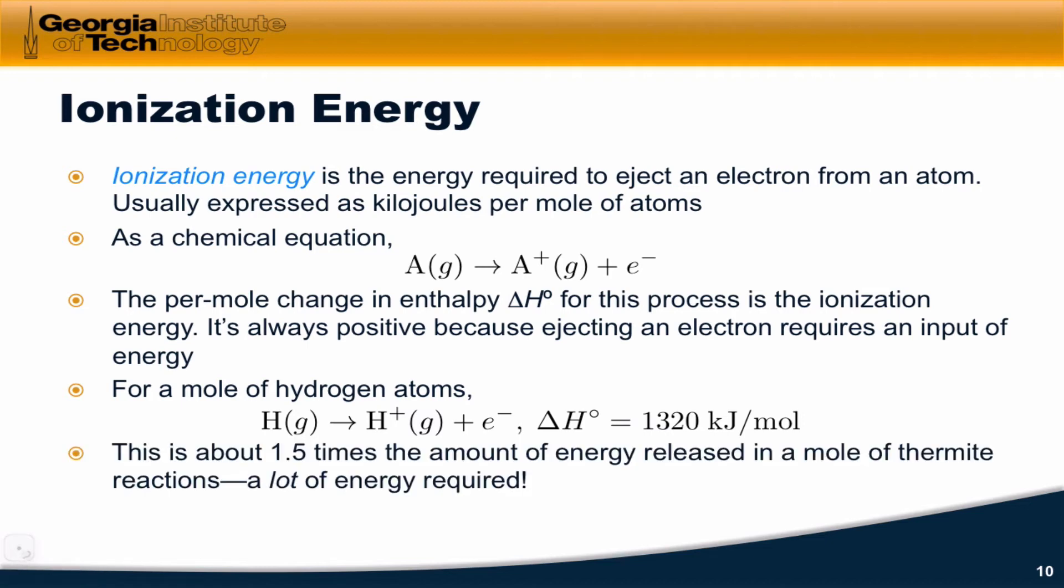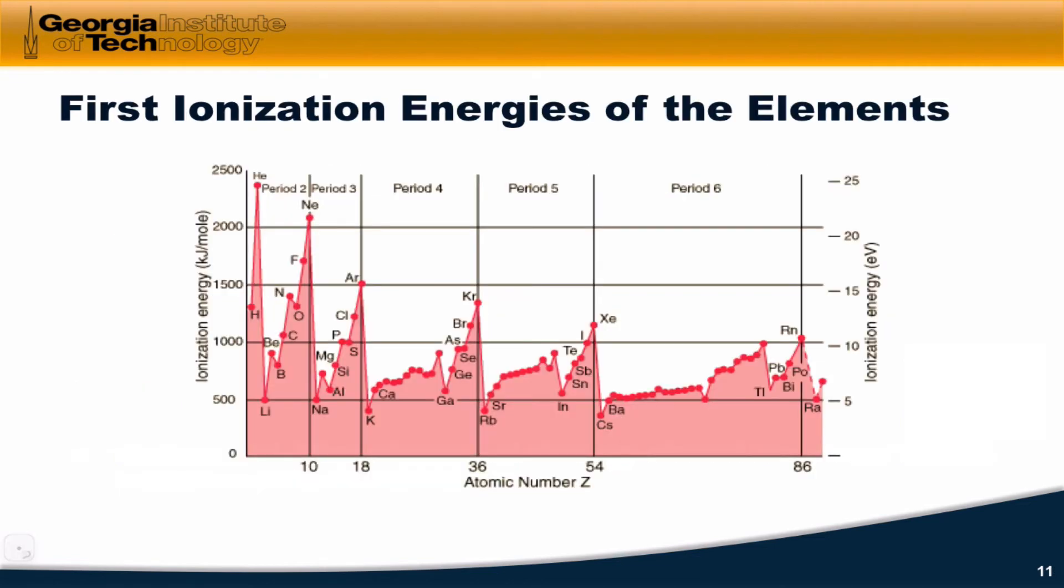This is about one and a half times the amount of energy released in a mole of thermite reactions, and if you've ever seen the thermite reaction, that is a lot of energy required to eject electrons from a mole of hydrogen atoms. Looking at how ionization energy varies across the elements gives us insight into the nature of electrons within the atom.